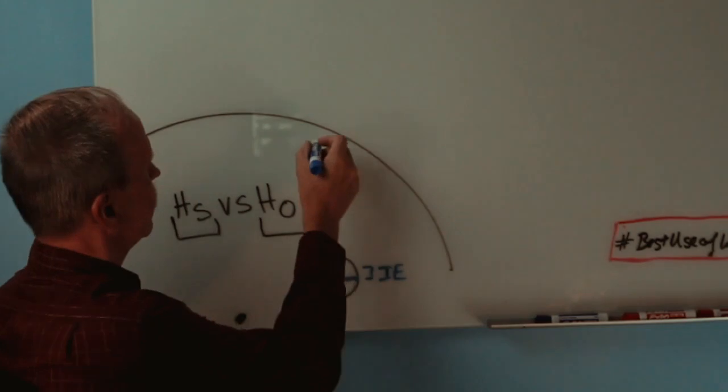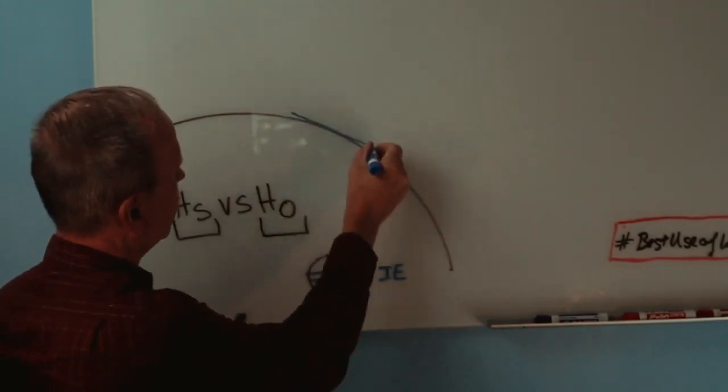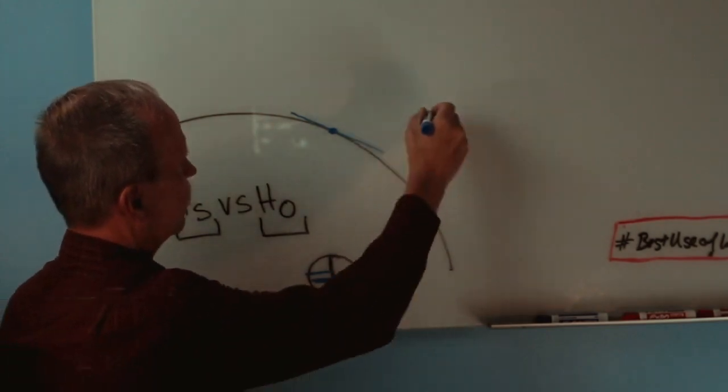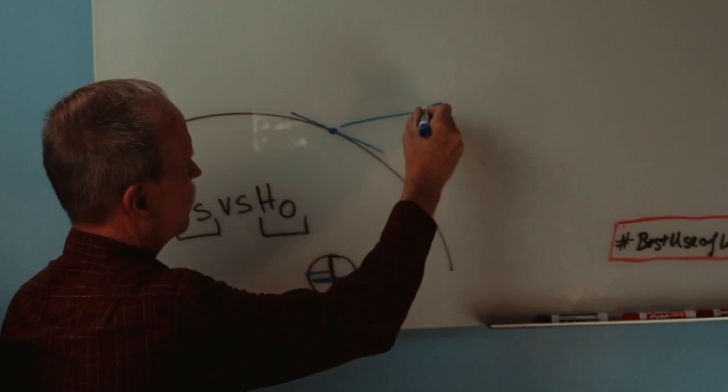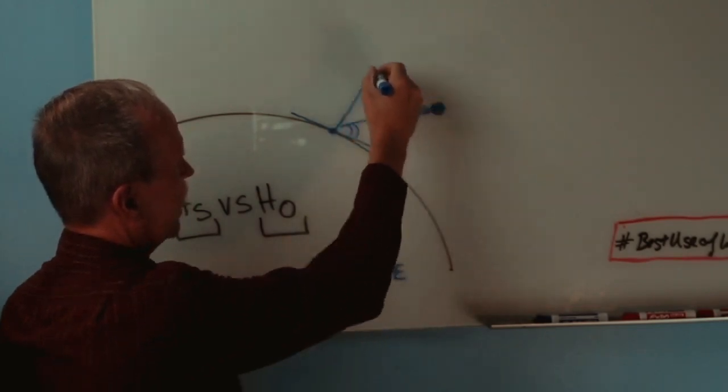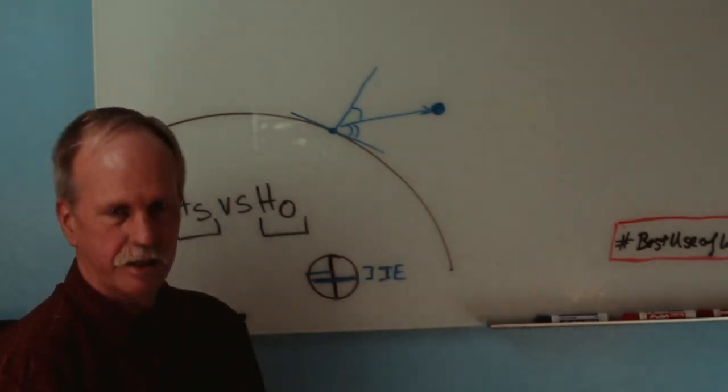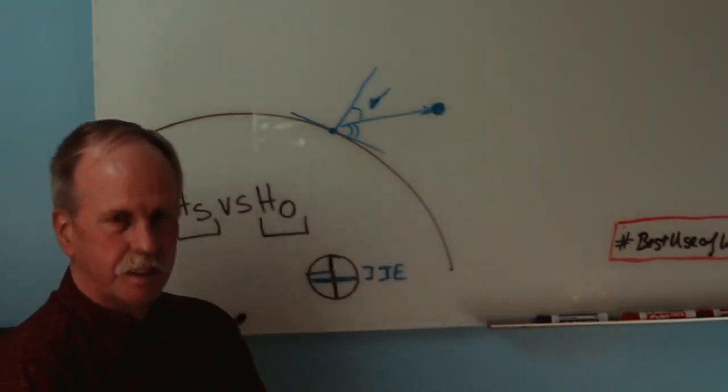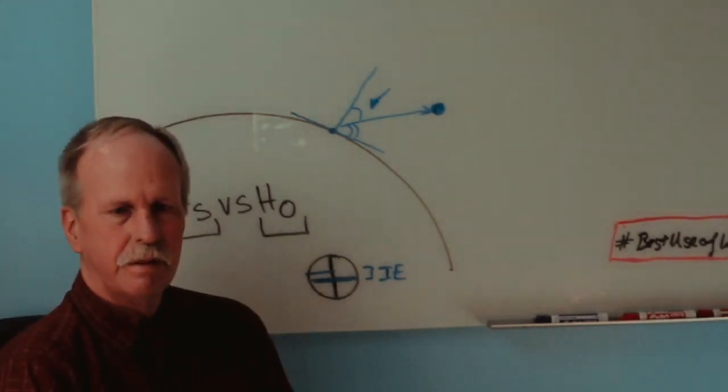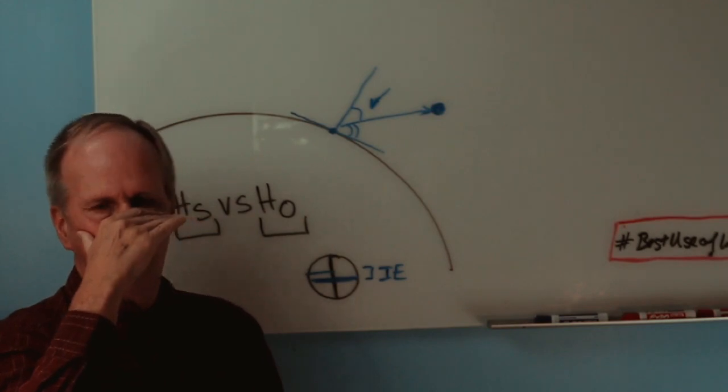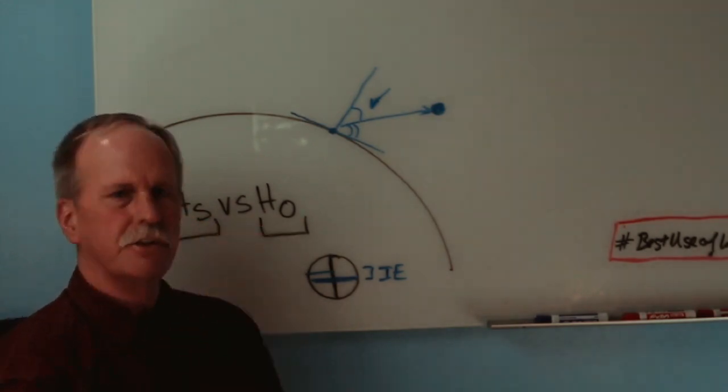So first of all, the sextant works by comparing a tangent line at a point on the earth to an angle. So you read this angle, and from that you calculate the angle that you want to use, which is this one. However, in order to do that, we would have to be up to our eyeballs in the water reading straight out.